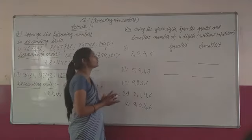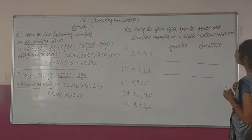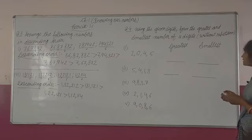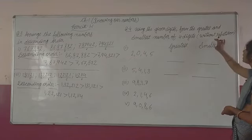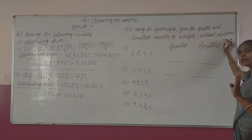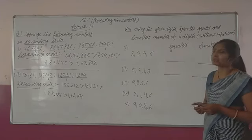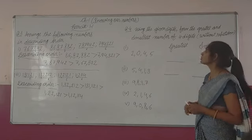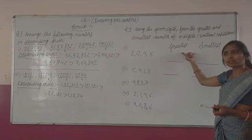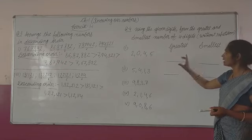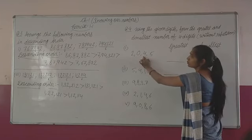Now the next question is question number 4: 'Using the given digits, form the greatest and smallest number of four digits without repetition.' How many digit numbers do we have to form? Four digits. The digits should not be repeated. The digits given are two, zero, four, five — these are digits separated by commas, not a number. We have to form a number from these digits.